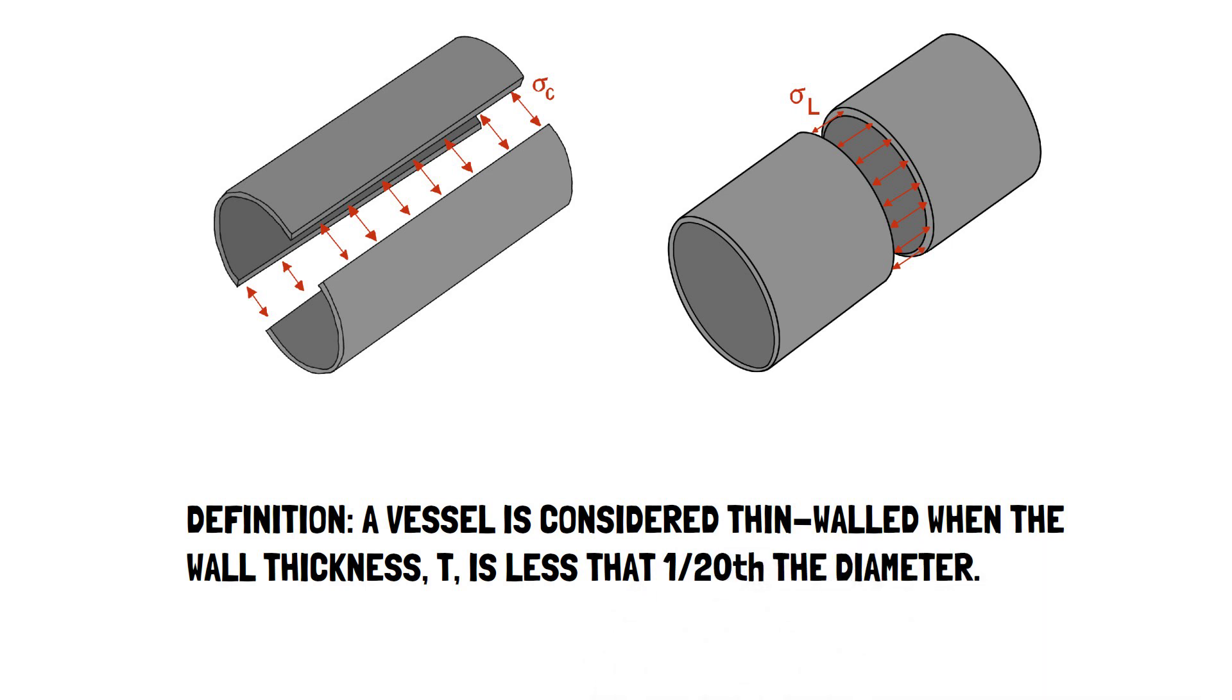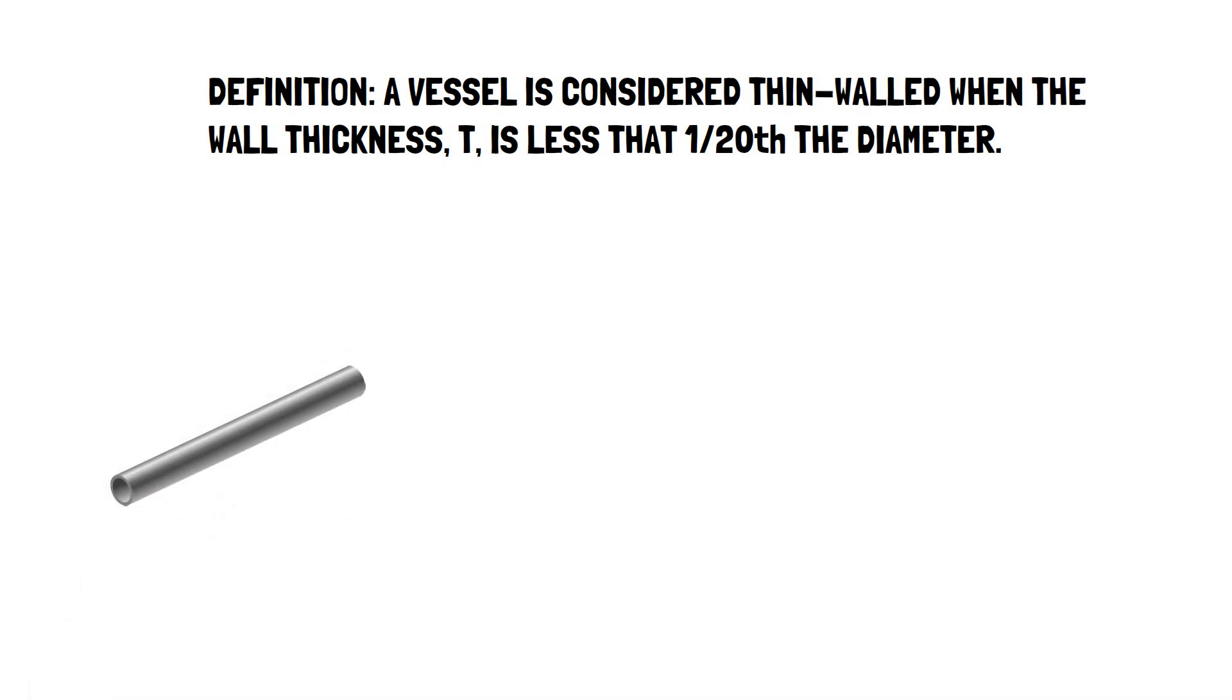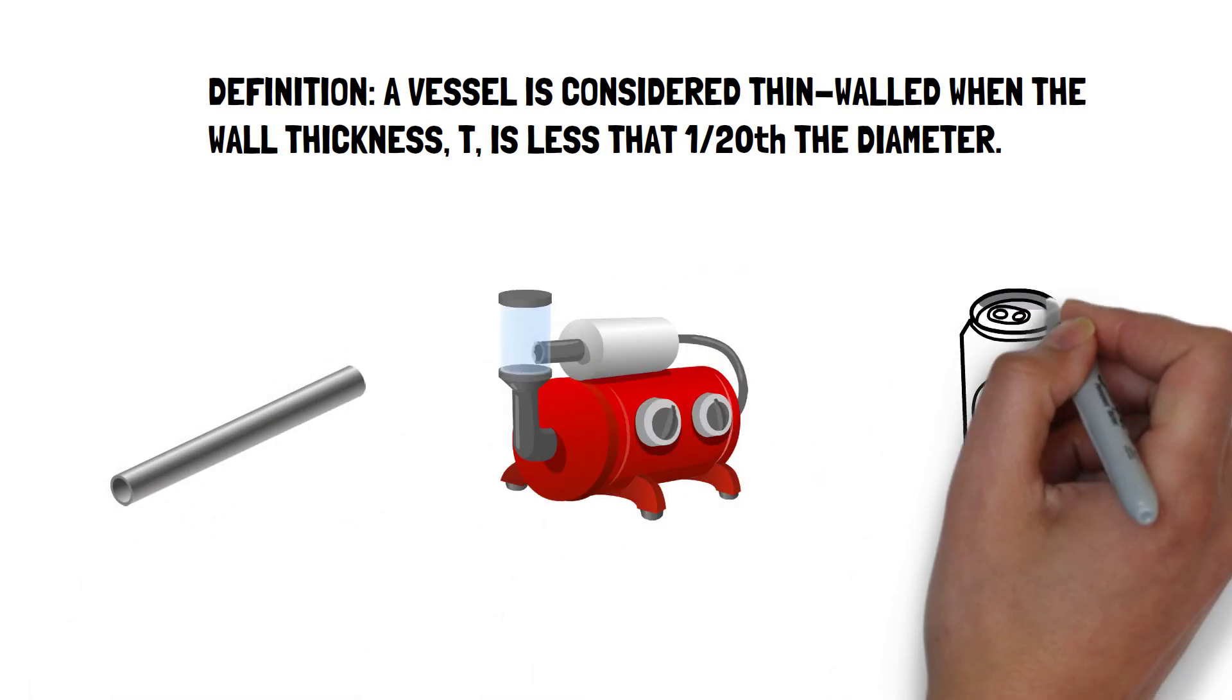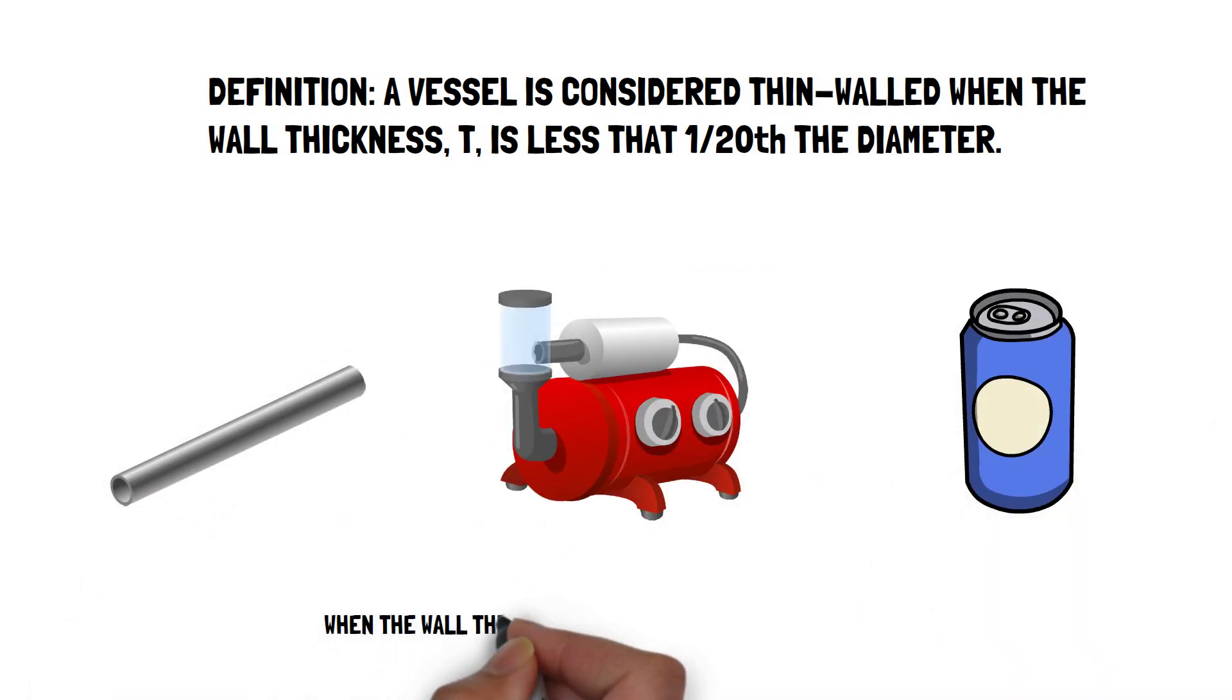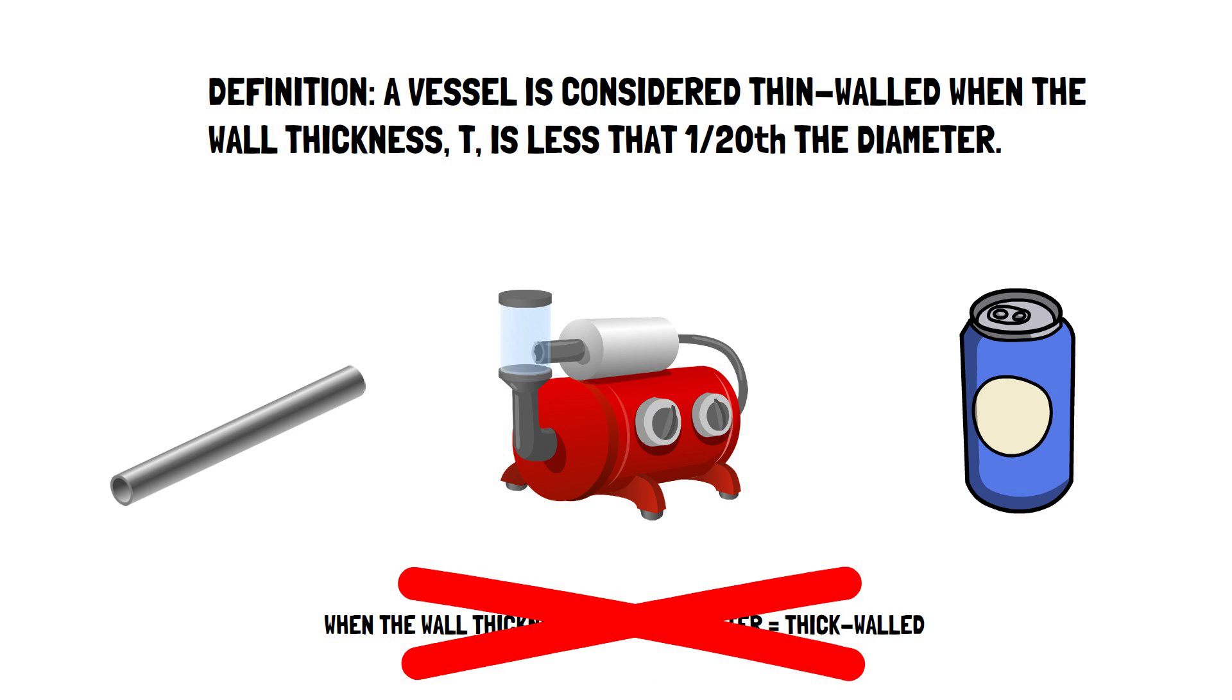You'll find these vessels in various applications like pipelines, boilers and soda cans. When the wall thickness exceeds this ratio, it is classified as thick walled and is analysed differently. But we don't need to worry about this for now.